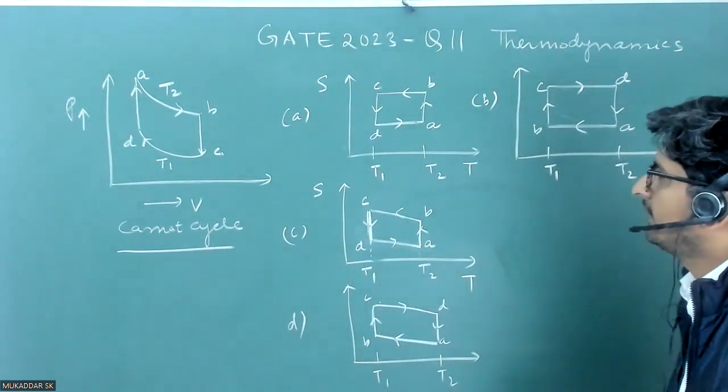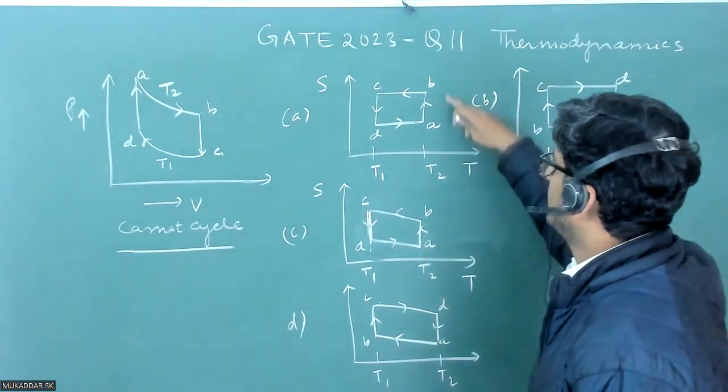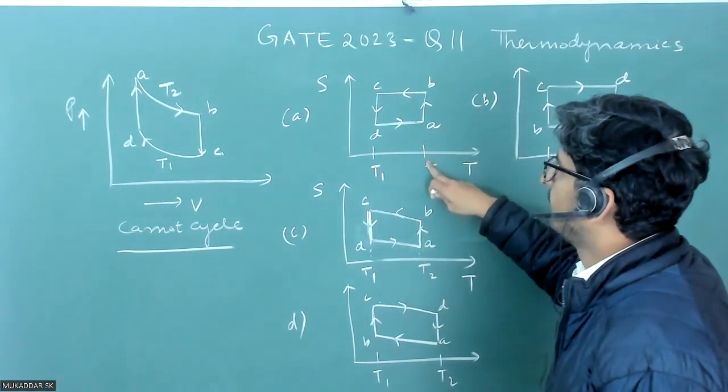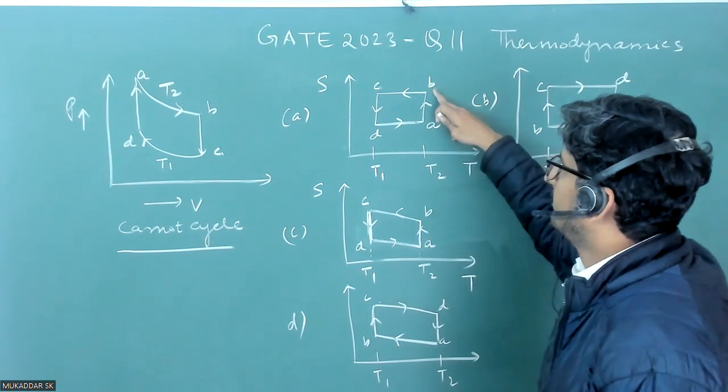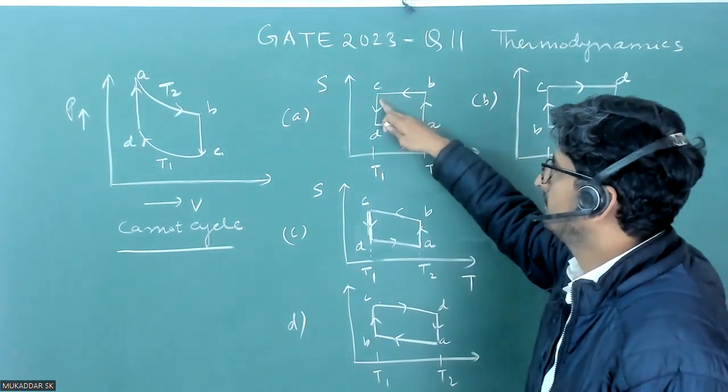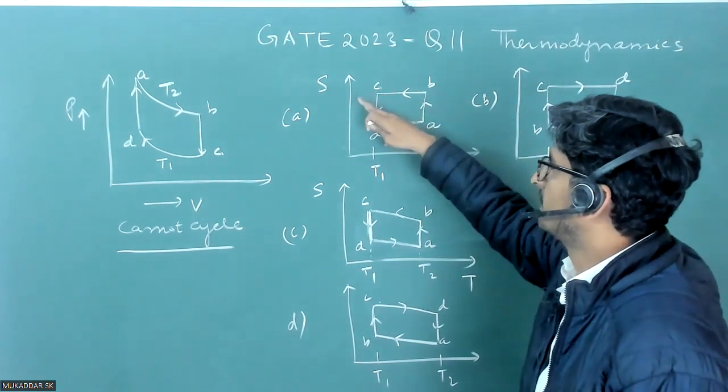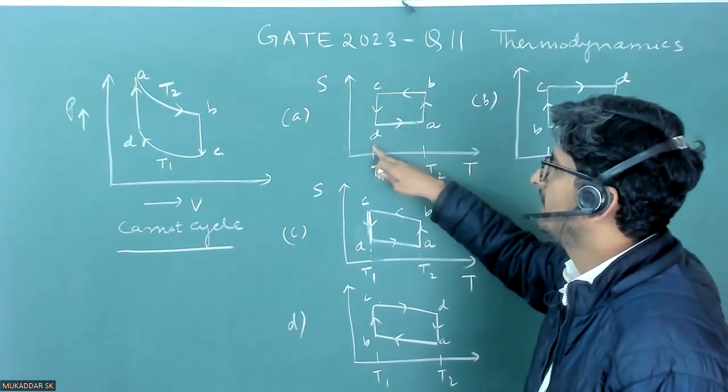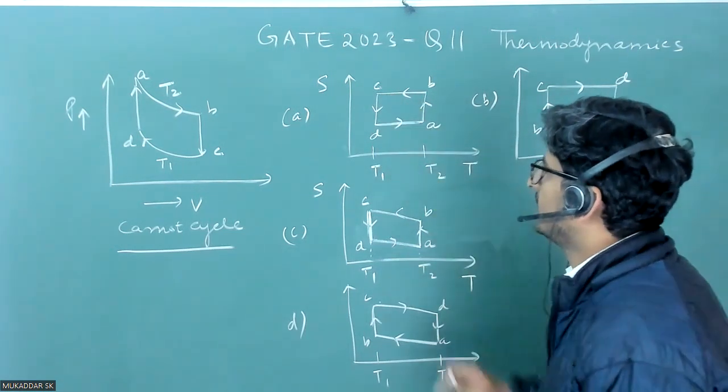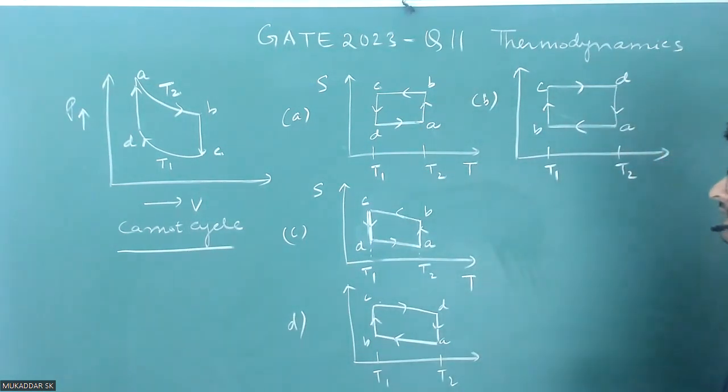So if I see it as a Carnot cycle then you can see that A to B temperature is T2, then B to C the entropy is constant because it is adiabatic, then C to D again temperature is T1 and then D to A again entropy is constant. So actually this should be the answer.